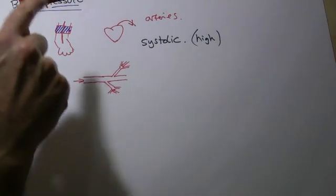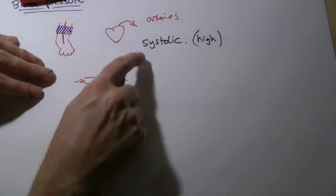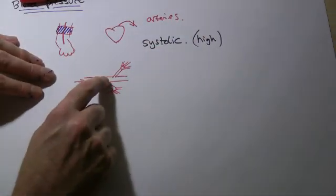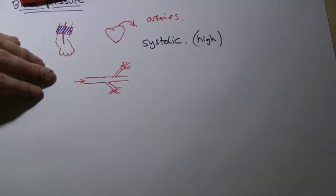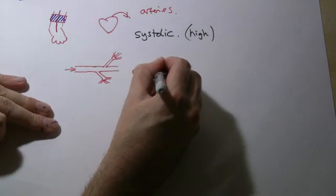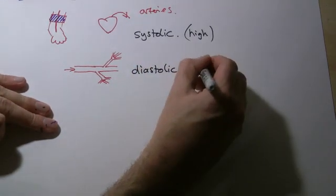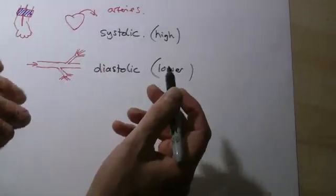What the blood pressure measures is, apart from that first measurement, the second measurement is how hard it is for the blood to get through these little gaps. And that second measurement is called the diastolic, and it's the lower of the two measurements. So whenever you get a blood pressure measurement there will always be two values.